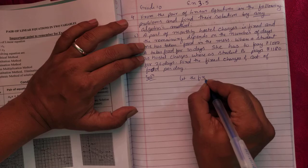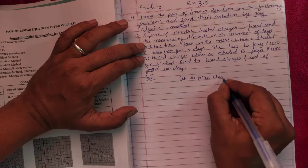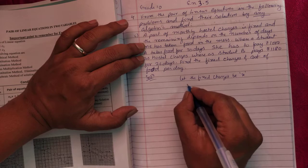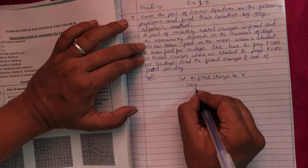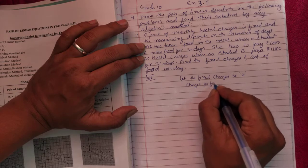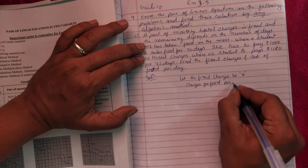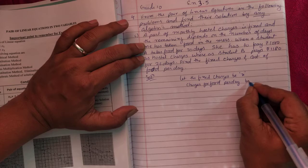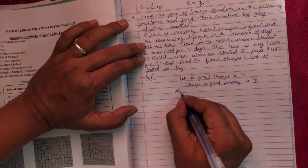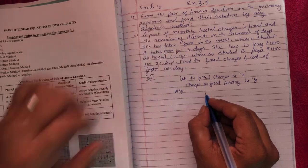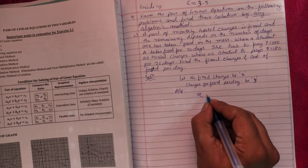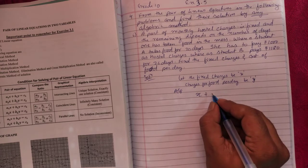Consider: let the fixed charges be x and charges for food per day be y. Now as per the question, the first part, for 20 days she is taking food, so fixed charge plus 20y equals 1000.